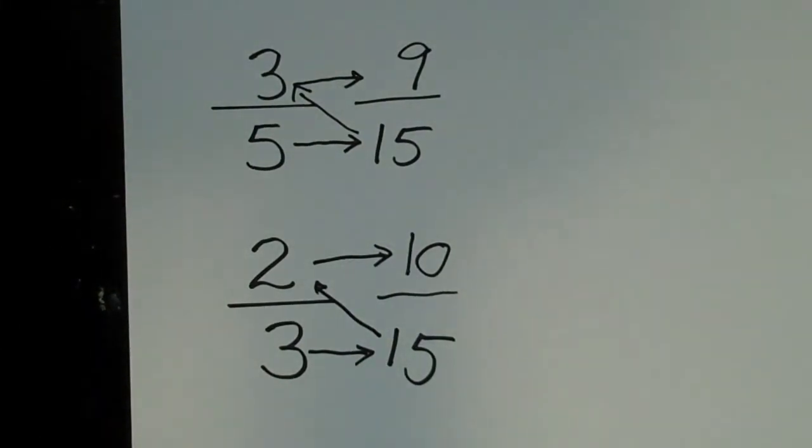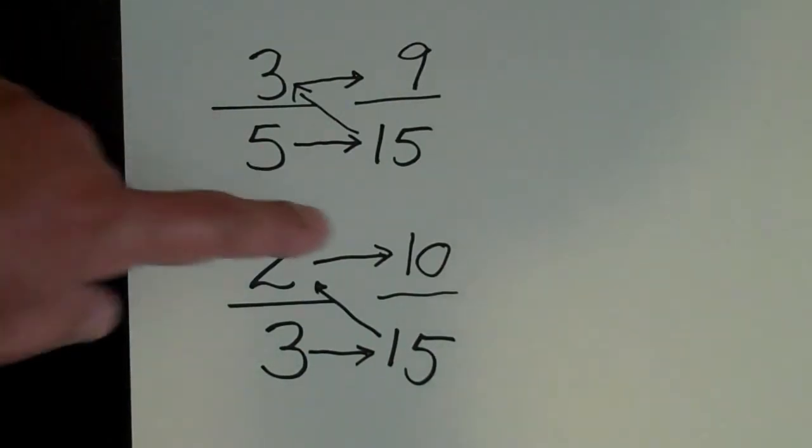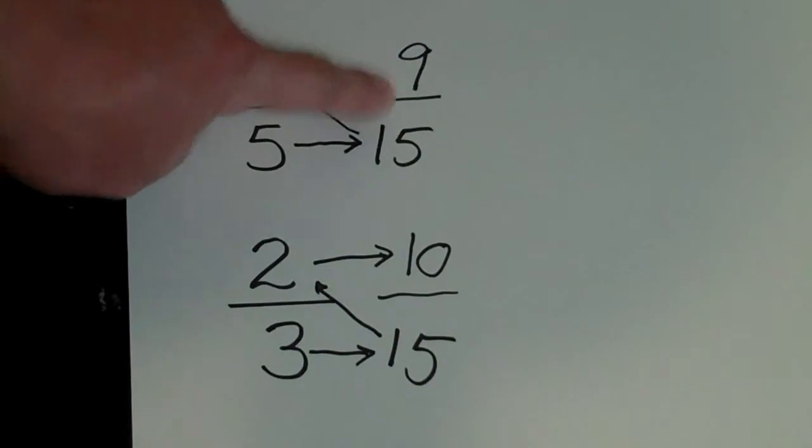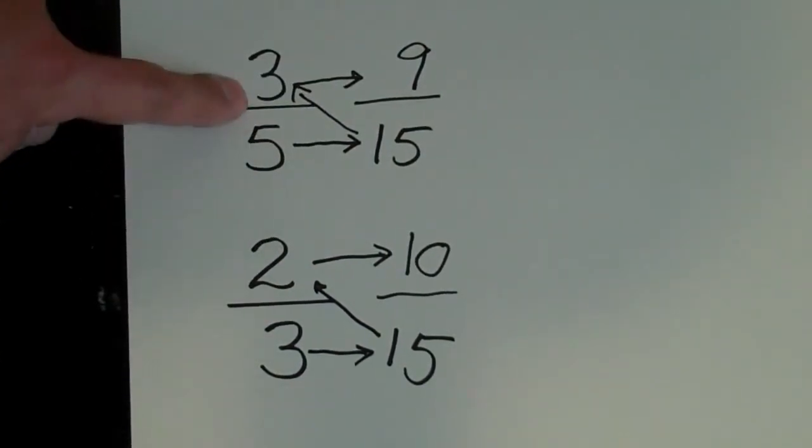And now I can compare these fractions. I just look at the numerator, or the top number in each fraction. And 10 is bigger than 9. So 2/3 is bigger than 3/5.